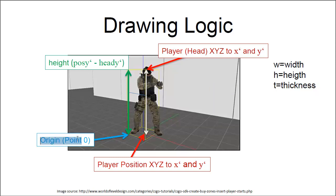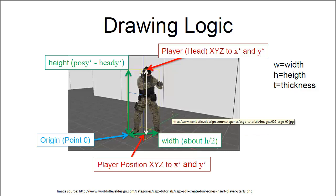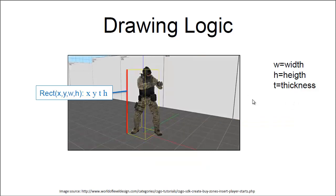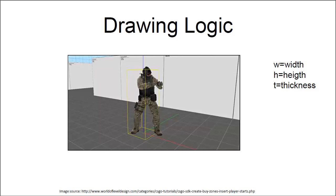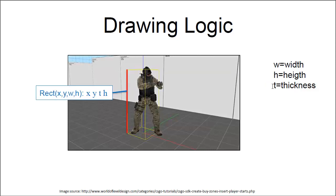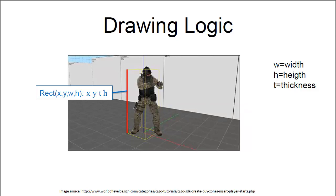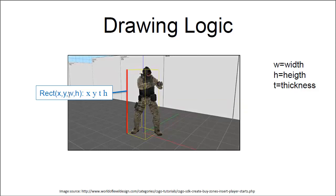Keep in mind that the origin point zero is at this point, not in the center. This is important when we start drawing. Don't forget about the width — we also have that, which is roughly height divided by two, at least for player models in CS. So let's get into the drawing. Our draw rectangle function takes X, Y, W, and H. For the left side, we give it X and Y as the starting point, thickness for width, and height as normal.